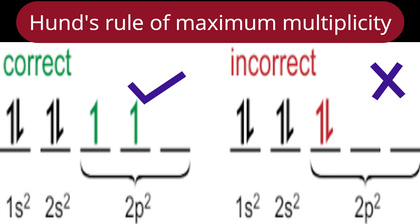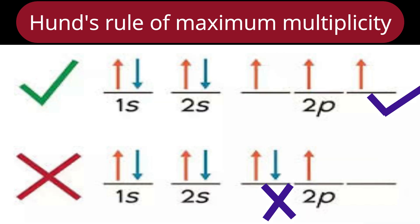Let us understand this rule with another example: nitrogen (atomic number 7): 1s², 2s², 2p³. Three electrons are there in the 2p subshell and three orbitals are available. One possibility is all three orbitals each with one electron; another possibility is one orbital with two electrons and another with one unpaired electron. In the first arrangement, there are three unpaired electrons; in the second, only one. Since all 2p orbitals are degenerate, the first option is correct. This is based on Hund's rule of maximum multiplicity.